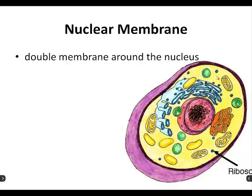Nuclear membrane — an imaginative name for the membrane that's around the nucleus. Make sure you note in your function area that it's a double membrane, sort of analogous to the cell membrane. It controls what can go in and out of the nucleus, basically keeping the DNA in and hopefully everything else out. Make sure you get it on your worksheet, check those boxes, and get it on your bingo board as well.